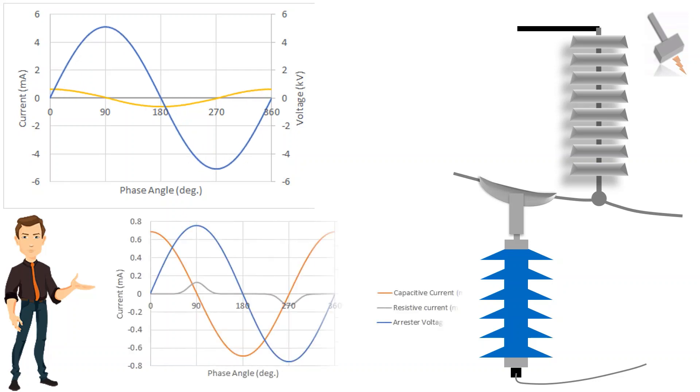The resistive component of leakage current will be very small compared to the capacitive component of leakage current at continuous operating voltage.